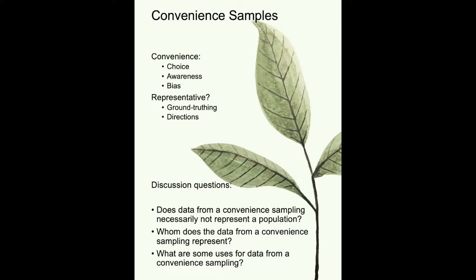Convenient samplings are often said to be not representative, but two important things to remember: first, they do represent the feelings and impressions of the people who took the survey. Second, you don't know if a convenient sampling is actually representative or not representative of a population — you can't say definitively unless you do some ground-truthing.